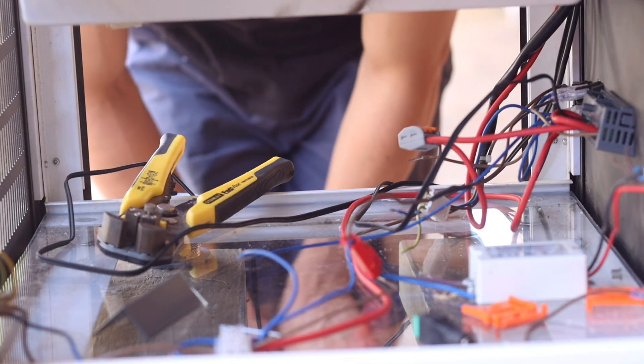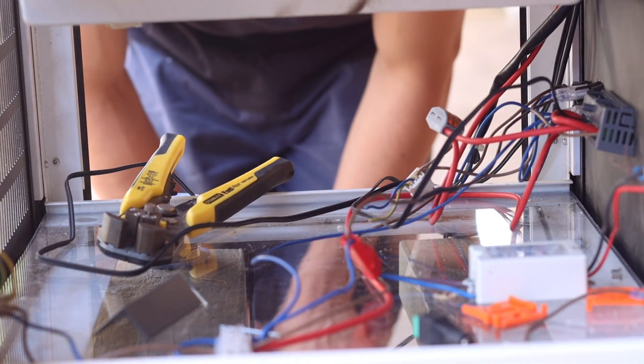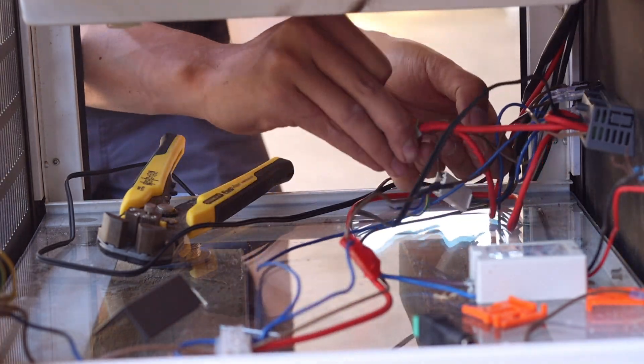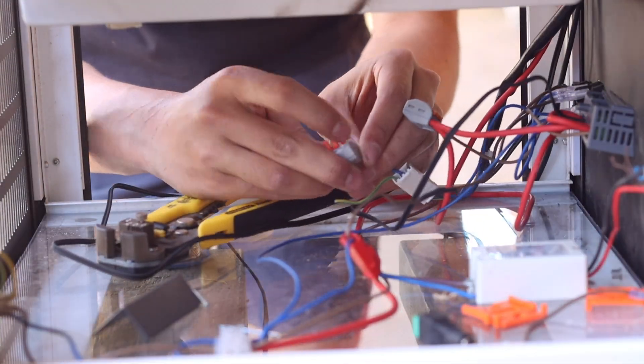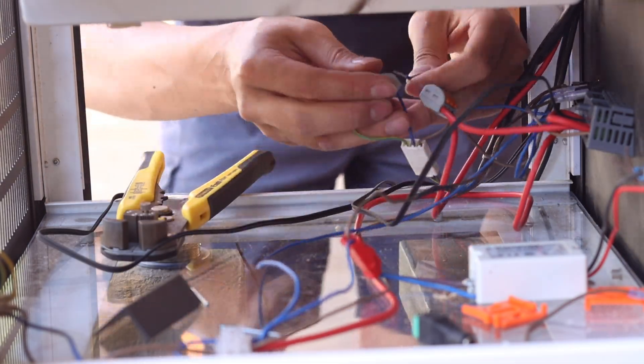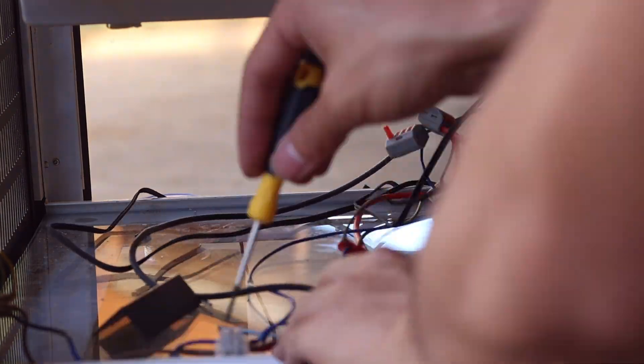The next part looks messy but it is not too complicated. What I did was essentially connecting the heater, fan, and LED lights to the power source, but each circuit contained either a thermostat or a toggle switch to have some form of control. I have other videos that go into a bit more detail on how I wire thermostats and incubators.